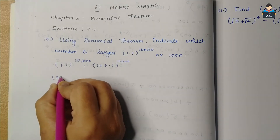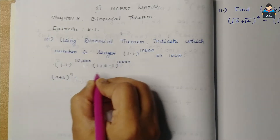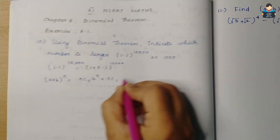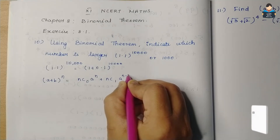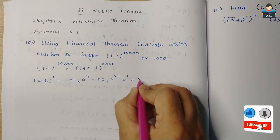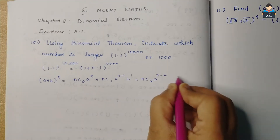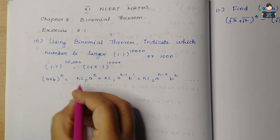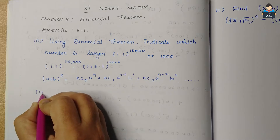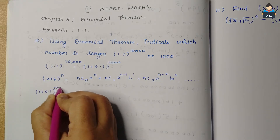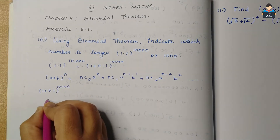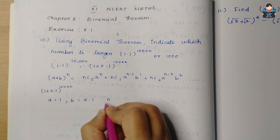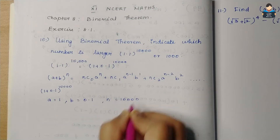So (a + b)^n equals nC0 · a^n + nC1 · a^(n−1) · b^1 + nC2 · a^(n−2) · b^2. This is the formula we will apply. For 1.1^10000, we write it as (1 + 0.1)^10000, where a = 1, b = 0.1, and n = 10,000.